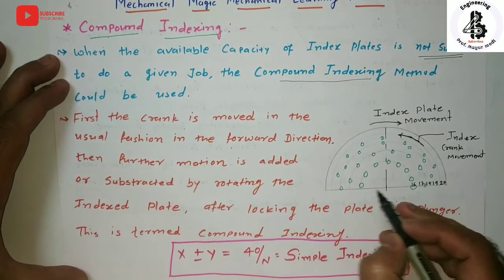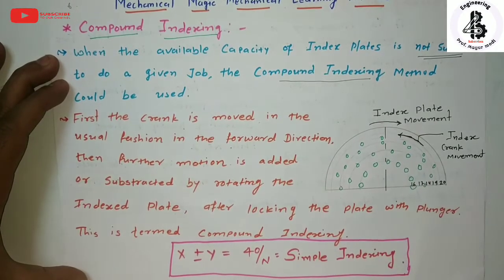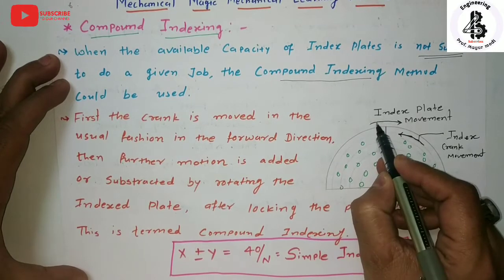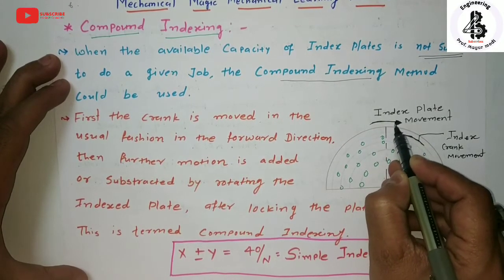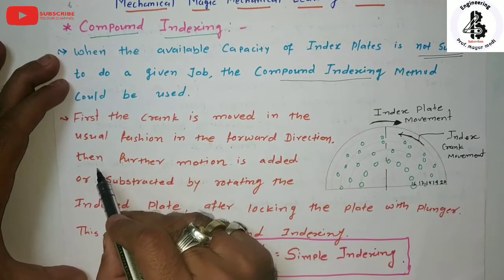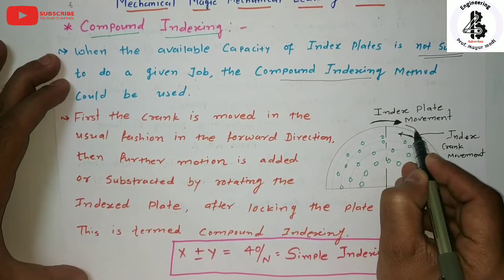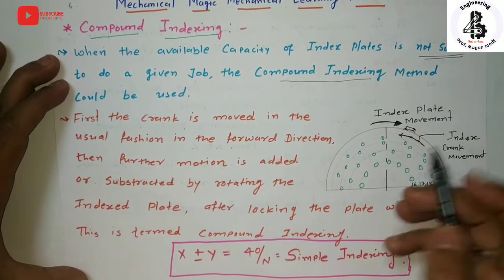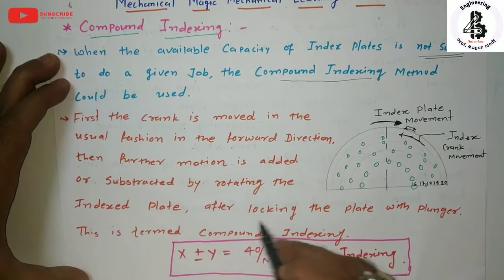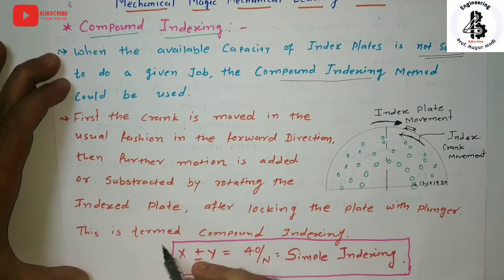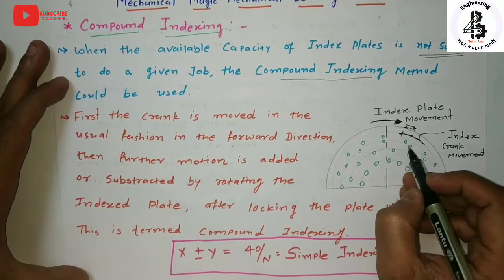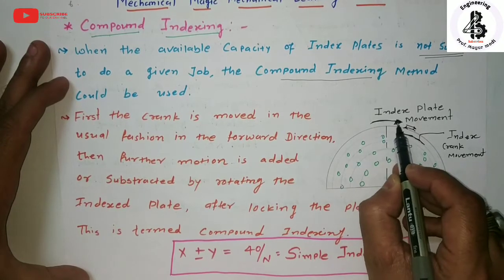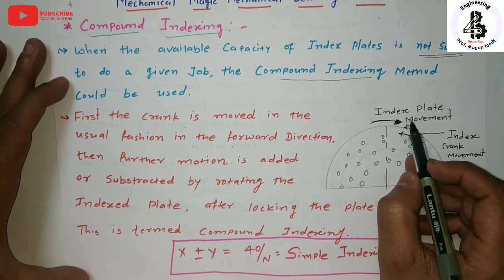In compound indexing, the crank is first moved in the usual fashion - the index plate is moved in the forward direction - then further motion is added or subtracted. Subtracted means reverse movement; added means further addition. The index plate is locked with the plunger. Basically, two kinds of movement are required to perform exact indexing with compound indexing. At the initial state, the index plate is moved in the clockwise direction.